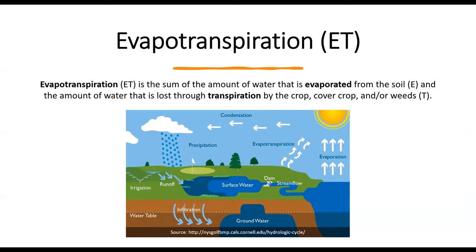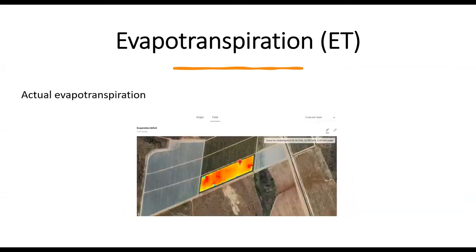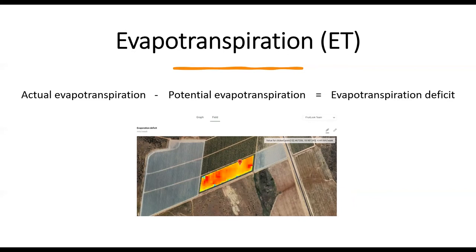Evapotranspiration represents the actual amount of water lost in the crop production process and is expressed in millimeters per week. The water lost by evapotranspiration is picked up in the water cycle and can come back via precipitation. FruitLook provides you with the actual evapotranspiration information — this is the real crop water used on a certain day and what the ETLook algorithm calculates. The potential evapotranspiration represents the amount of water that could be evaporated and transpired under actual meteorological conditions and ample water supply.